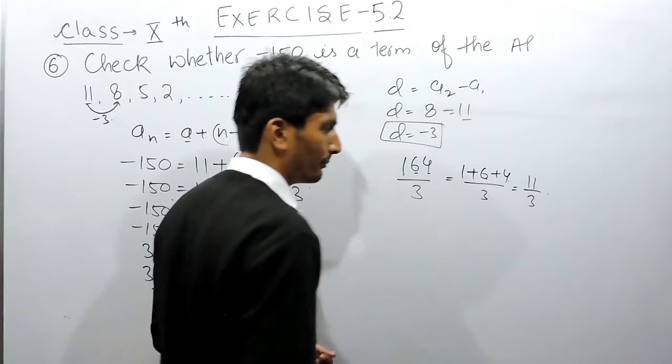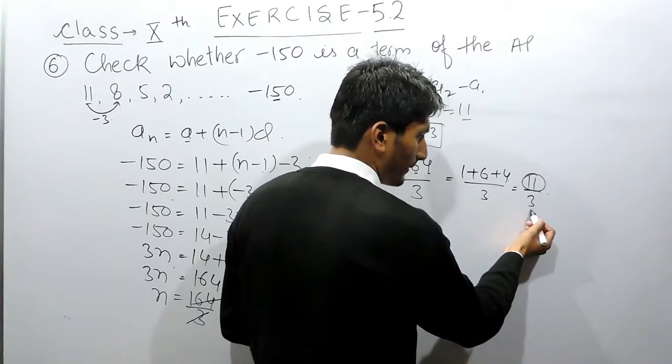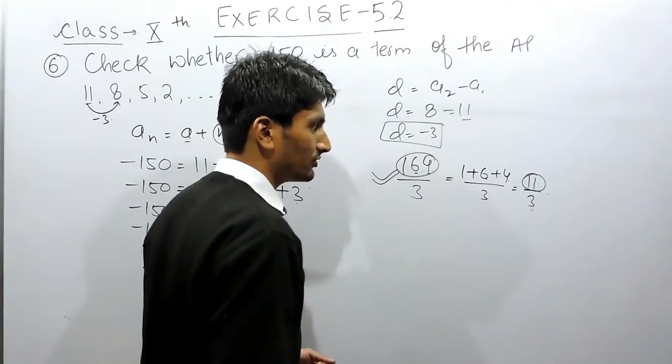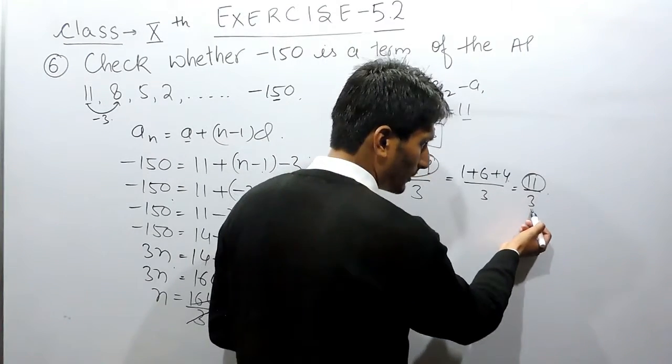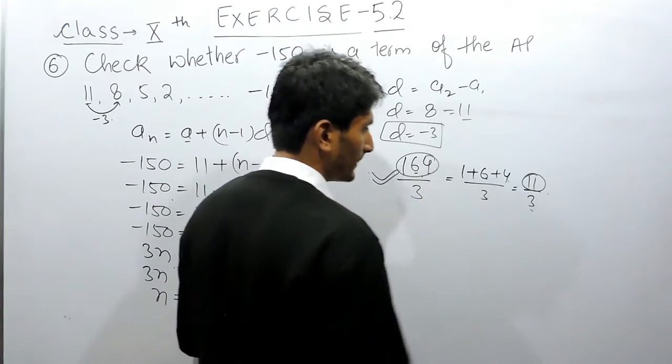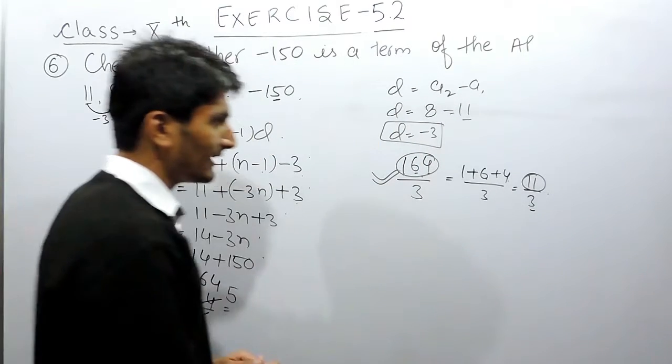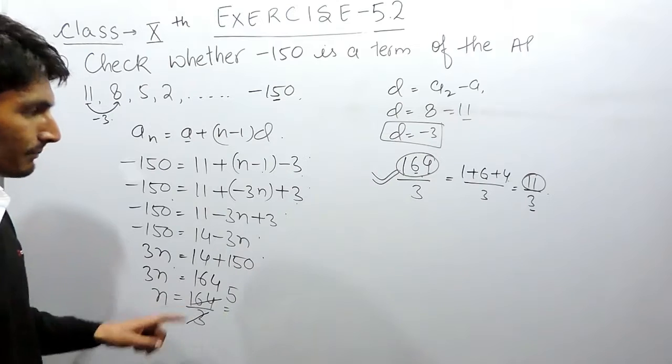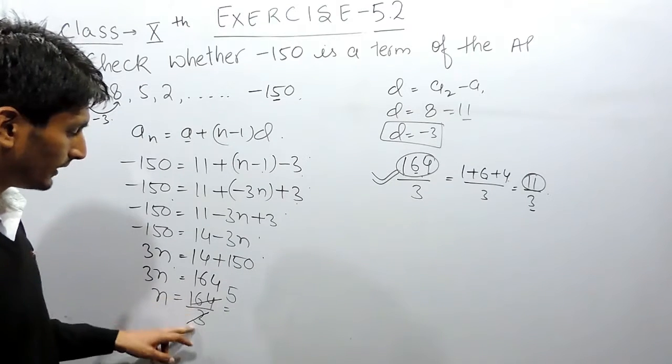If this sum is divisible by 3, so this complete number must also be divisible by 3. And if the sum is not divisible by 3, so this number must also not be divisible by 3. So in this case, the sum is not divisible by 3, so clearly this number must also not be divisible by 3.